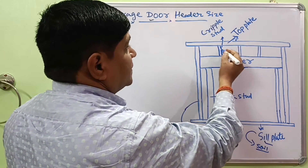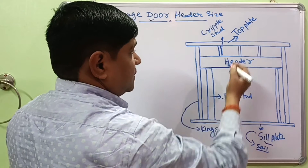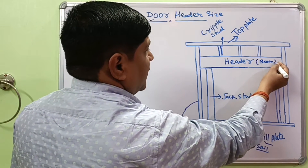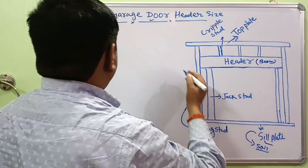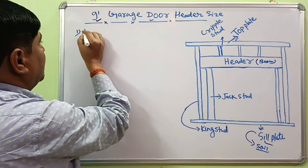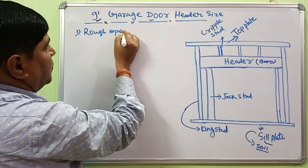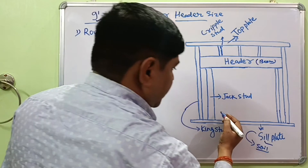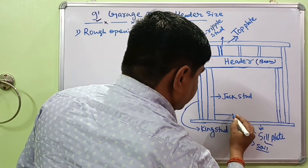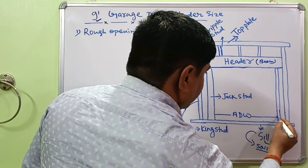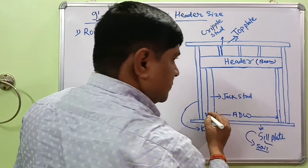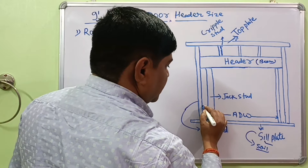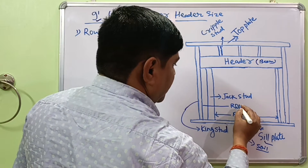Above the header, this is the cripple stud, and this is the top plate. The header simply acts as a beam placed over the opening. Now, how to find the rough opening — what will be the rough opening if the garage door width is 9 foot? This is the actual door width after the finish of the door jamb, and this is the rough opening width.